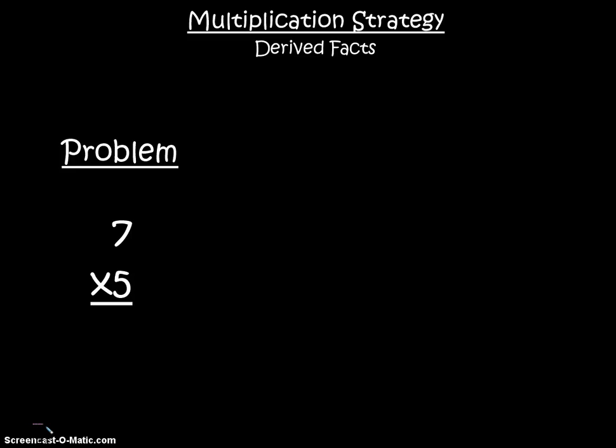Today we're going to look at the multiplication strategy of derived facts. Facts are things that we just know, we have memorized and understand already. When we use derived facts, we use multiplication facts that we know to solve multiplication problems that we don't know.